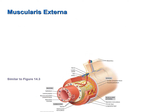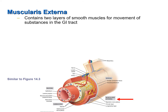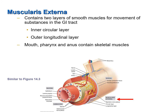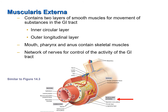Moving from the submucosa outward, the next layer is the muscularis externa. The muscularis externa is responsible for the movement of substances through the GI tract. It contains two layers of smooth muscles: an inner circular layer and an outer longitudinal layer. The mouth, pharynx, and anus also contain skeletal muscles. And like the submucosa, there is a network of nerves for control of the activity of the GI tract found in the muscularis externa as well.